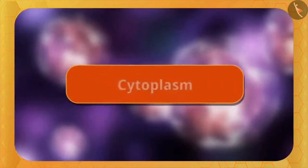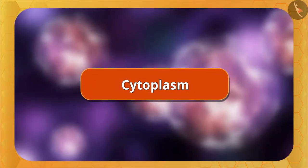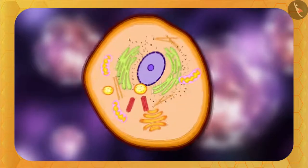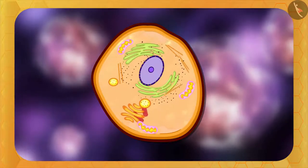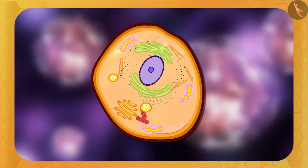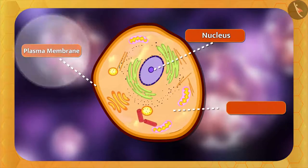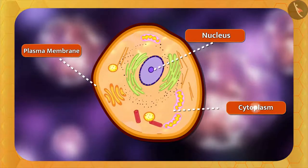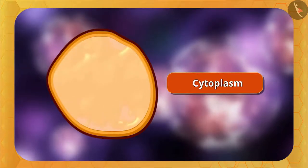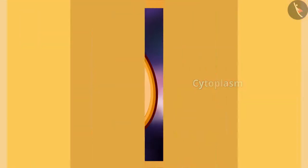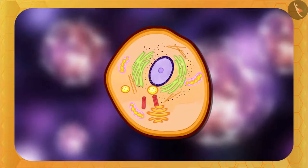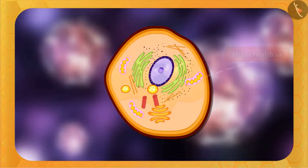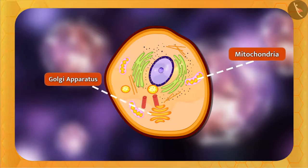First, let us understand cytoplasm. The part between the nucleus and the plasma membrane in the cell is called the cytoplasm. It is a jelly-like fluid.